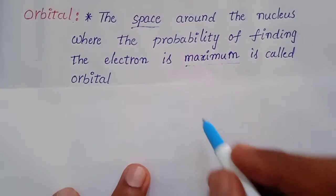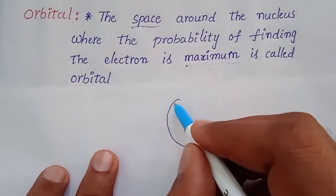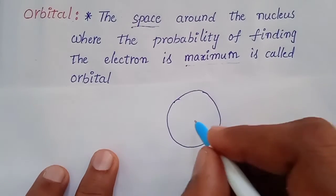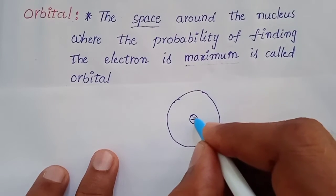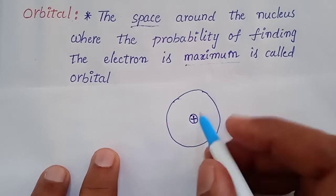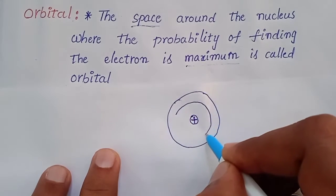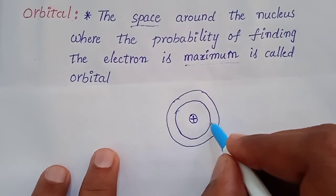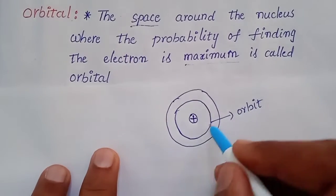Now let us consider this is an atom. This is the nucleus, exactly at the center of the atom. Around this, let us consider this is a circular path, which is called an orbit.